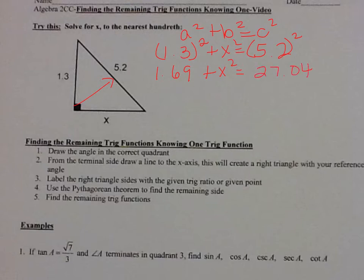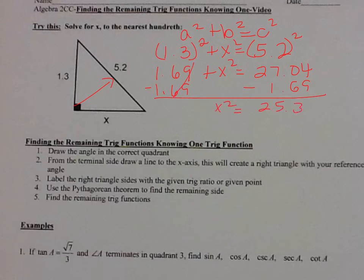So we'll subtract 1.69. You get x squared is equal to 25.35. And the square root of both sides to the nearest hundredth would be 5.03.